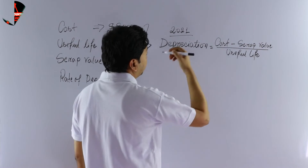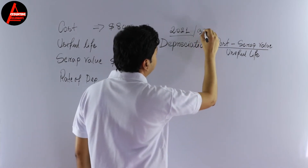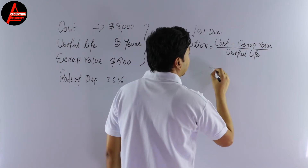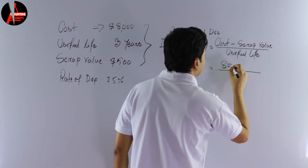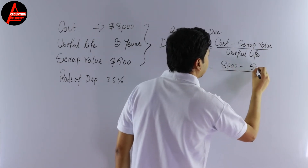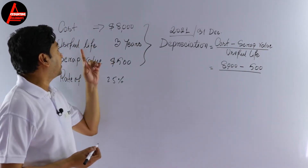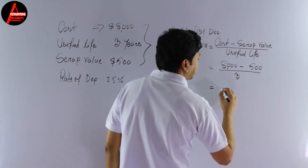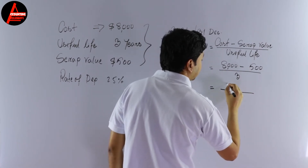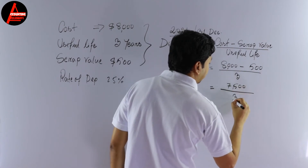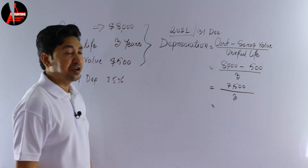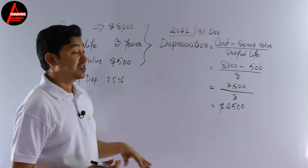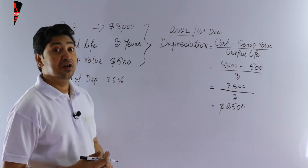So we are calculating depreciation for 2021, recorded on 31st December. Now applying the formula: cost is eight thousand dollars, scrap value is five hundred dollars, and useful life is three years. Eight thousand minus five hundred equals seven thousand five hundred dollars. Dividing seven thousand five hundred by three gives us two thousand five hundred dollars depreciation per year.